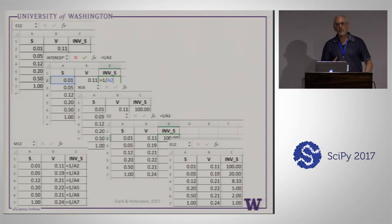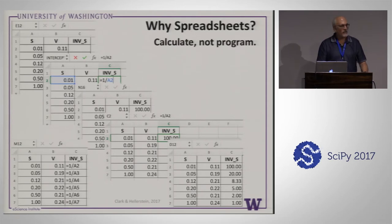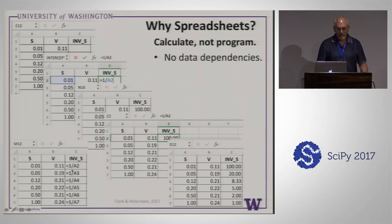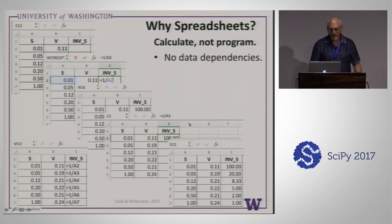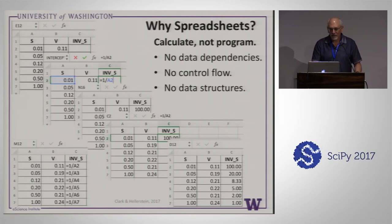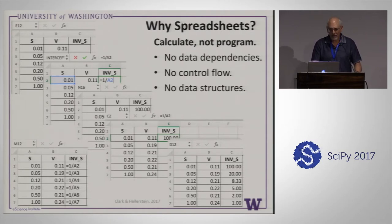So why is this so compelling? Why is it so widely used? One reason is that you're focused on calculation, not programming. You don't have to worry about data dependencies — the fact that this column depends on that column, it figures it out underneath. You don't have to worry about flow control either — I did iteration without a for loop, just copy-paste. And data structures, probably one of the more complicated parts of programming, are handled as the background structure.